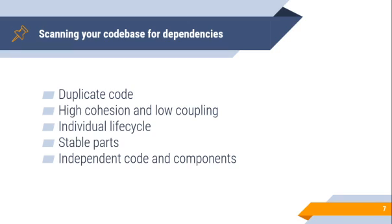High cohesion and low coupling. A second approach is to find code that might define a component in your solution. You will look for code elements that have high cohesion to each other and low coupling with other parts of the code. This could be a certain object model with business logic, or code that is related because of its responsibility, such as a set of helper or utility code, or perhaps a base for other code to be built upon.